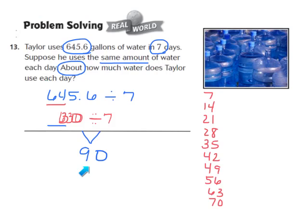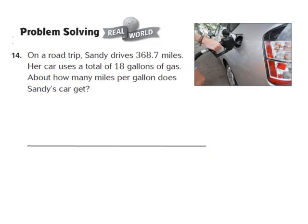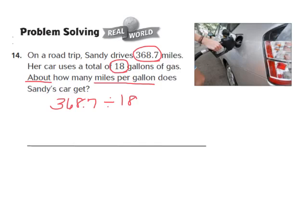So Taylor uses about 90 gallons of water each day. Now let's look at question number 14, another real-world problem. It says: on a road trip, Sandy drives 368 and 7 tenths miles, and her car uses a total of 18 gallons of gas. About how many miles per gallon does Sandy's car get? Our problem becomes 368 and 7 tenths divided by 18 gallons.